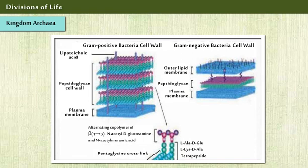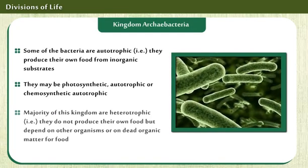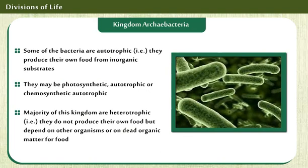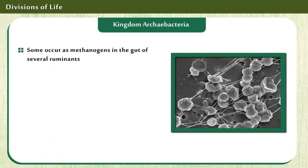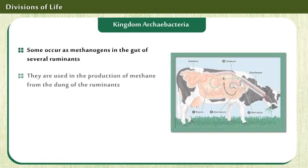Their cell walls are composed of various polysaccharides, pseudomurine, and proteins. Methanobacterium have walls containing pseudomurine, a peptidoglycan-like polymer that has L-amino acids in its cross-links, N-acetyl talo semi-neuronic acid, and beta-1,3 glycosidic bonds. Some of the features and ecological important characteristics of this kingdom are displayed on the screen.